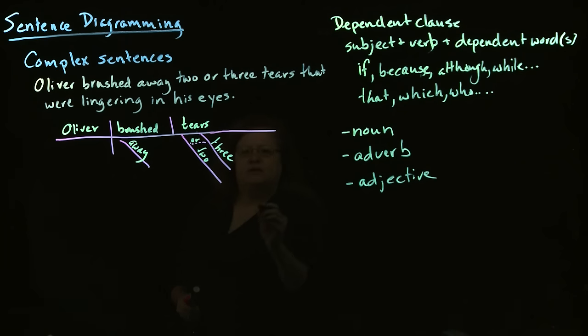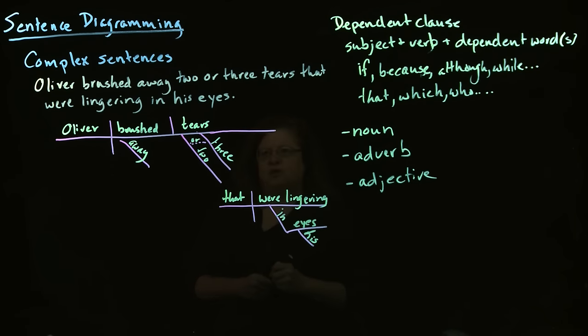We have then our second clause, which is that were lingering in his eyes. And the way we show this is connected is we draw a diagonal line. And I should have made this further over because the diagonal line is supposed to come at the beginning of that. But we have this diagonal line connecting to the word that that shows our dependent clause is modifying tears.